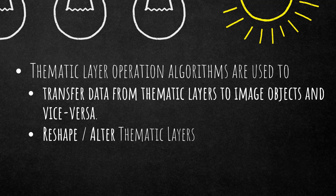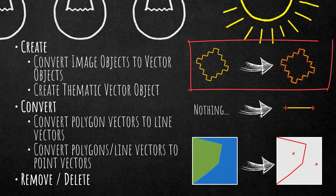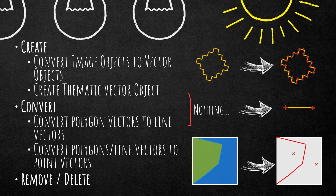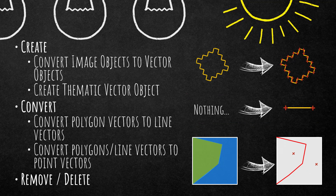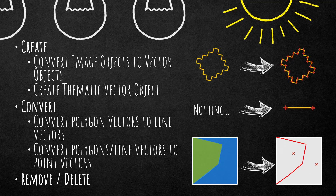We're going to focus on how to create, convert, and remove or delete your thematic layers. For creation, I'll show you two different algorithms: one that converts image objects to vector objects, and a second that creates thematic vector objects out of nothing. Afterwards we'll look at conversion — converting polygon vectors to line vectors, and converting polygons or line vectors to point vectors. Finally, I'll show you how to remove or delete thematic layers or remove polygons within thematic layers.